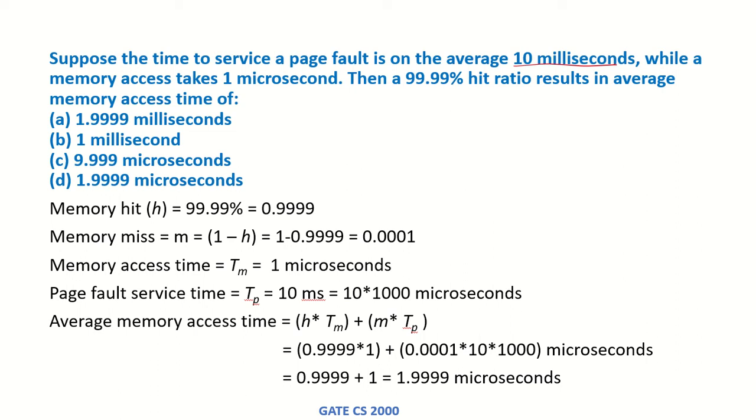Suppose the time to service a page fault is on average 10 milliseconds, while a memory access takes 1 microsecond. Then a 99.99% hit ratio results in average memory access time of: